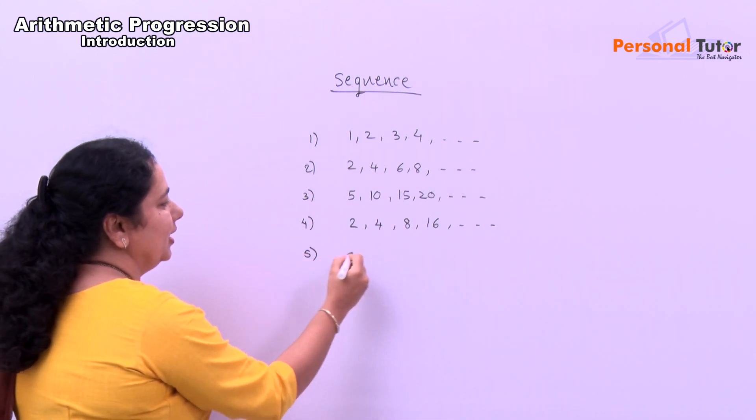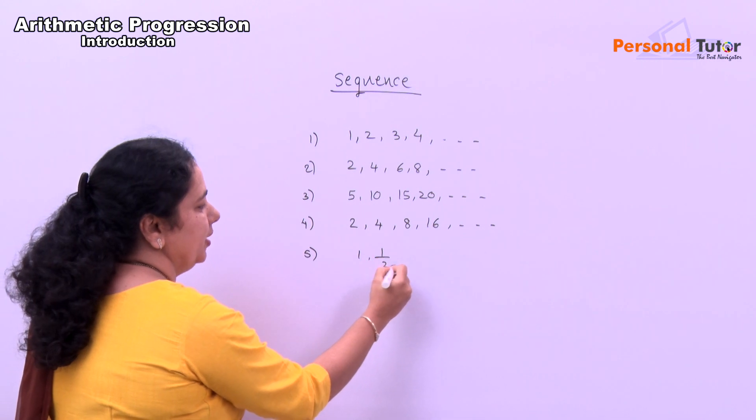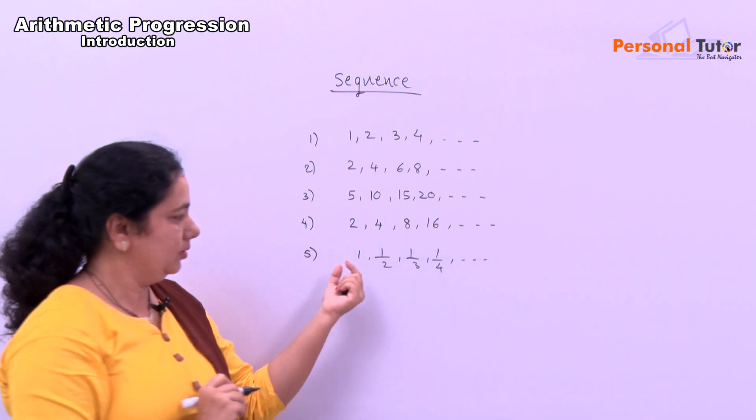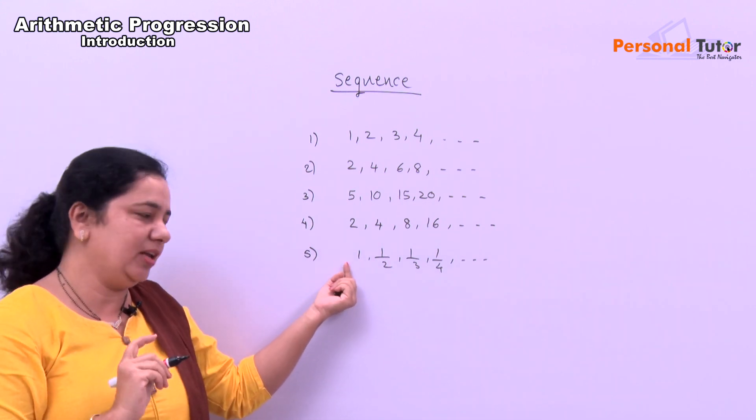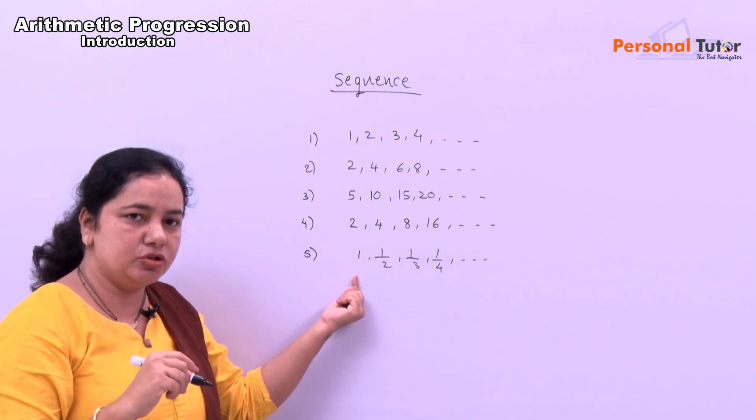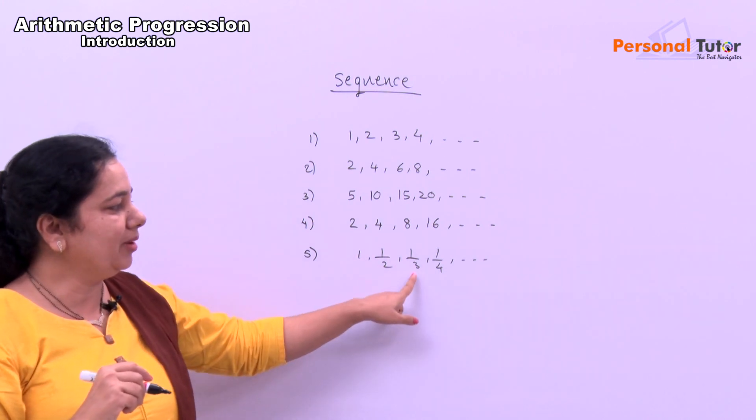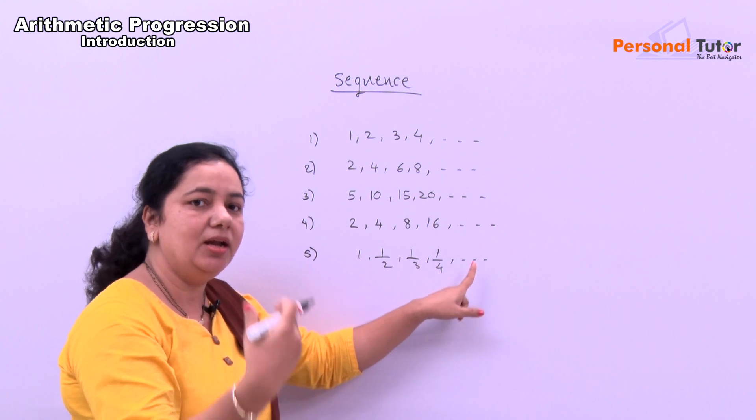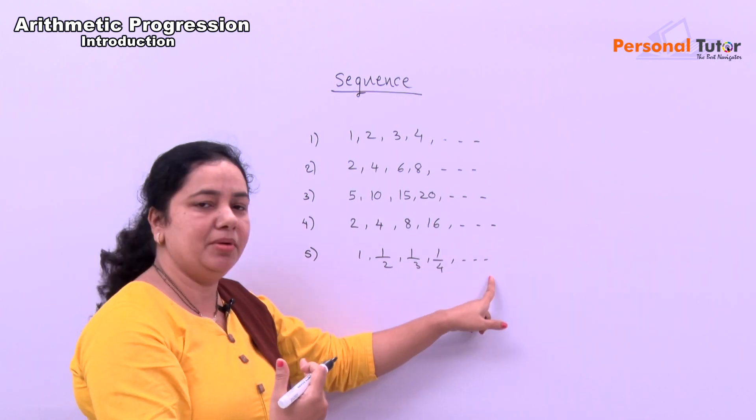Suppose numbers are like this: 1, 1 by 2, 1 by 3, 1 by 4. Now look at this number. First number is 1, you can write it as 1 by 1 also. 1 by 2, 1 by 3, 1 by 4. What is next number? Next number is 1 by 5, 1 by 6 and 1 by 7.